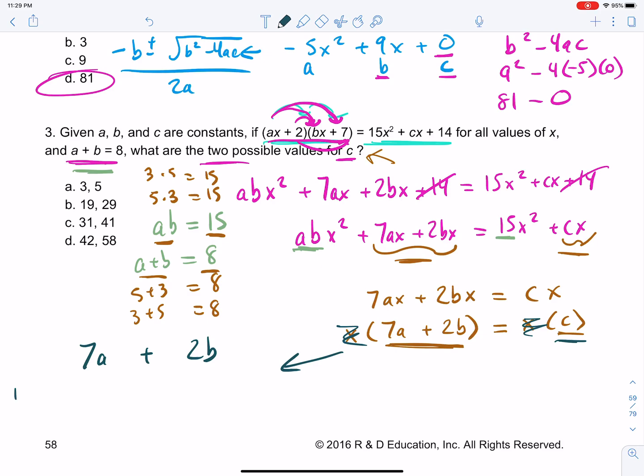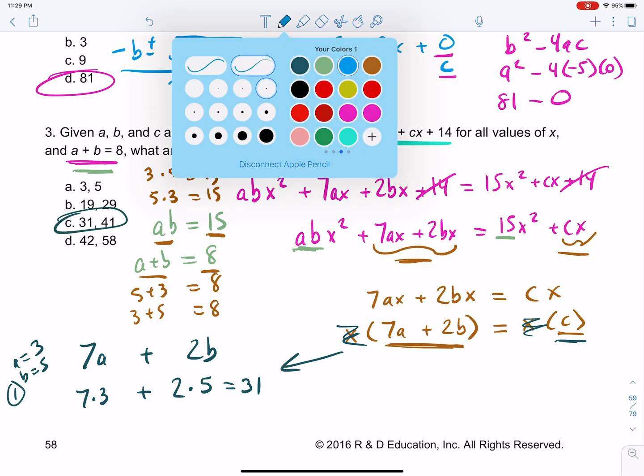So what can we do there? 7 times 3 plus 2 times 5. And what would that be? 21 plus 10, which is 31. That's scenario number one. And by the way, we would know that's the answer because that's the only one that has it there. But let me just show it to you the other way as well.